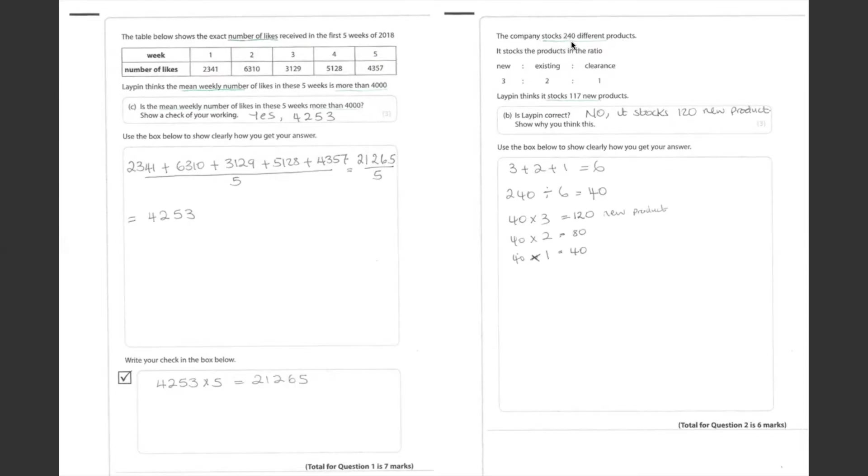The company stocks 240 different products in the ratio of 3 to 2 to 1. The first thing we need to do is add all the ratio together. 3 plus 2 plus 1 is 6. Since the company stocks 240 different products, we do 240 divided by 6, which equals 40.